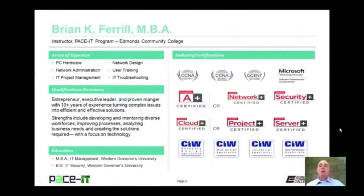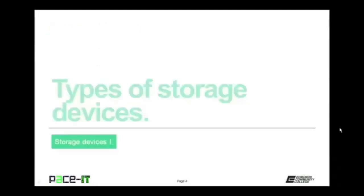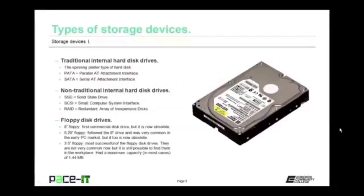Welcome to PACE IT's session on storage devices part one. We're going to talk about types of storage devices, SCSI storage devices, and RAID. First up is the traditional internal hard disk drive — the spinning platter type. It had two types of interfaces: the parallel AT attachment interface, the PATA interface, and the SATA interface, serial AT attachment. These are still very common in today's computers.